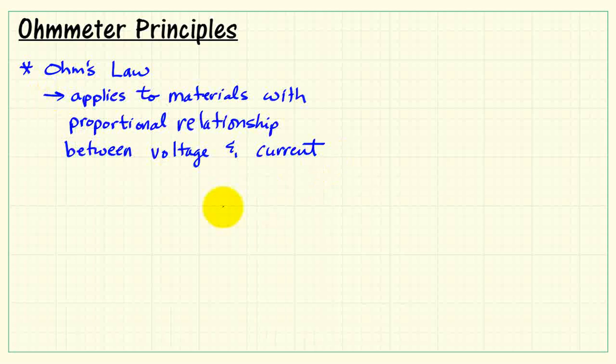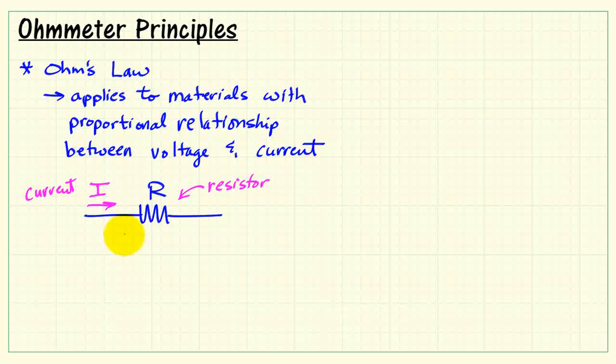Now you may have heard of Ohm's law at this point. This applies to materials with a proportional relationship between voltage and current. This is my symbol for a resistor. It has a resistance R. We have a current and a voltage associated with this resistor. And Ohm's law states that the voltage is proportional to current.